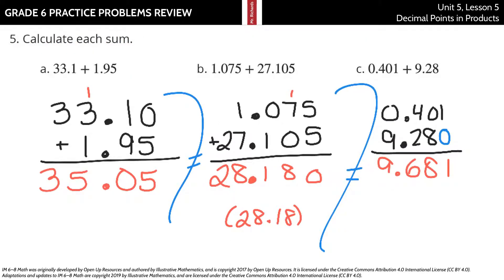In question five, we're reviewing our decimal addition. Just make sure you're lining up your numbers at the decimal points. You can use zeros as placeholders here, but zero plus five is five. One plus nine is ten, carry the one. One plus three is four, plus one is five. Then you've got your three.